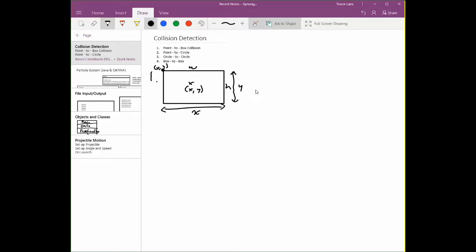If that's true, we also need to know if the y coordinate of the point exists between the top wall and the bottom wall.